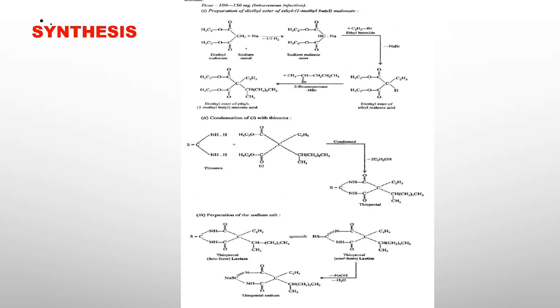Dimethyl malonate on reaction with sodium metal gives rise to the sodium malonic ester, which on treatment with ethyl bromide results in the formation of diethyl ester of ethyl malonic acid, with the elimination of hydrobromic acid. The resulting ester on further reaction with 2-bromopentane gives the desired compound, diethyl ester of ethyl malonic acid, which on subsequent treatment with thiourea forms thiopental with the elimination of 2 moles of ethanol. Ultimately, the enol form of thiopental when reacted with a calculated amount of sodium hydroxide gives thiopental sodium.